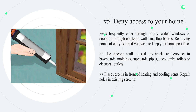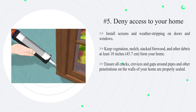Number five: deny access to your home. Pests frequently enter through poorly sealed windows or doors, or through cracks in walls and floorboards. Use silicone caulk to seal any cracks and crevices in baseboards, moldings, cupboards, pipes, ducts, sinks, toilets, or electrical outlets. Place screens in front of heating and cooling vents and repair holes in existing screens. Install screens and weather stripping on doors and windows. Keep vegetation, mulch, stacked firewood, and other debris at least 18 inches (45.7 cm) from your home, and ensure all gaps around pipes and other penetrations in the walls are properly sealed.